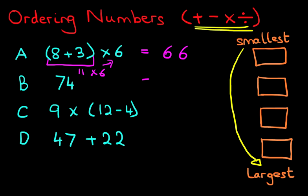Now on to B. Well, B is simply 74. It's the number on its own.